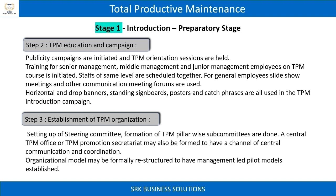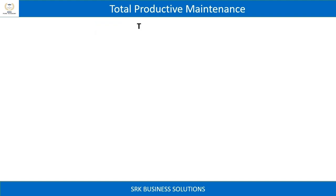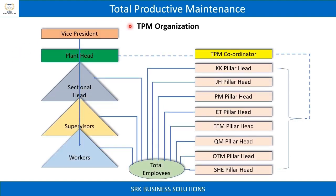The organizational model may be formally restructured to have management-led pilot models established. This is an example of the TPM organization and its relation with other areas and people in the organization, from top management to bottom-line operators, showing total involvement of people in TPM.